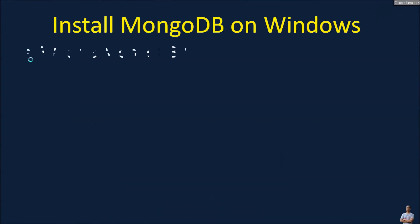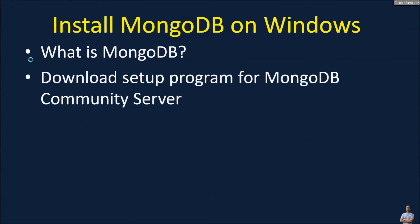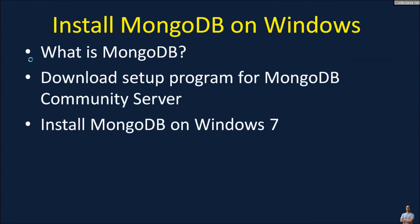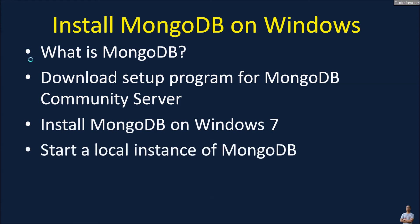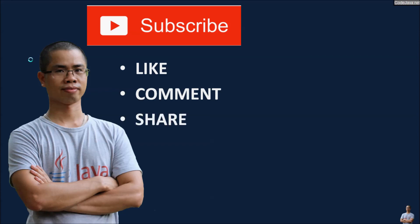So far I've covered: what MongoDB is, how to download the setup program from mongodb.com, how to install MongoDB Community Server on Windows 7, how to start a local instance of the MongoDB server, and how to run the MongoDB Shell to connect to it. I hope you find this video helpful. Please subscribe, like, comment, and share. Thank you.